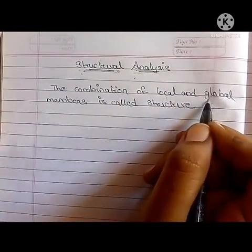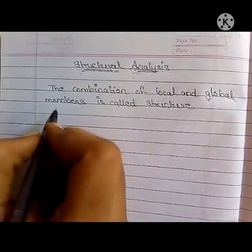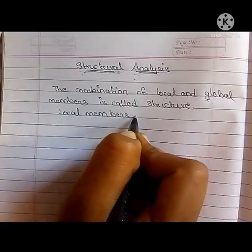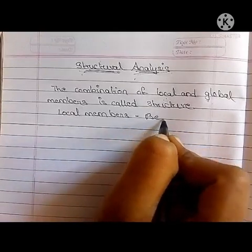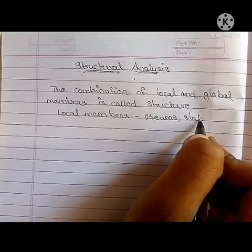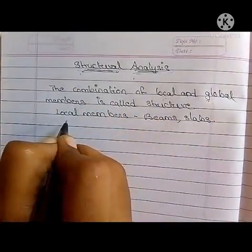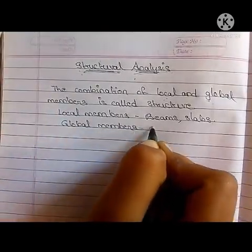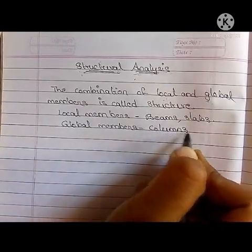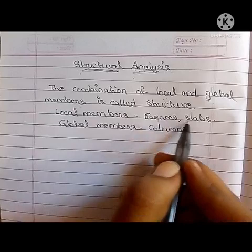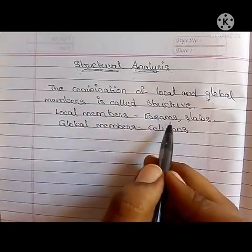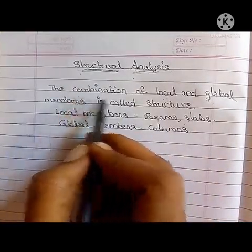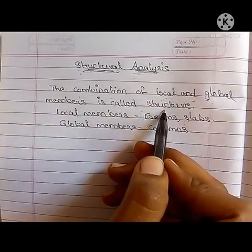Local members and global members are connected together in a building. Local members include beams and slabs, and global members include columns. So based on this definition, the combination of beams, slabs, columns, and other elements is nothing but the structure. Simply, structure means the combination of local and global members.